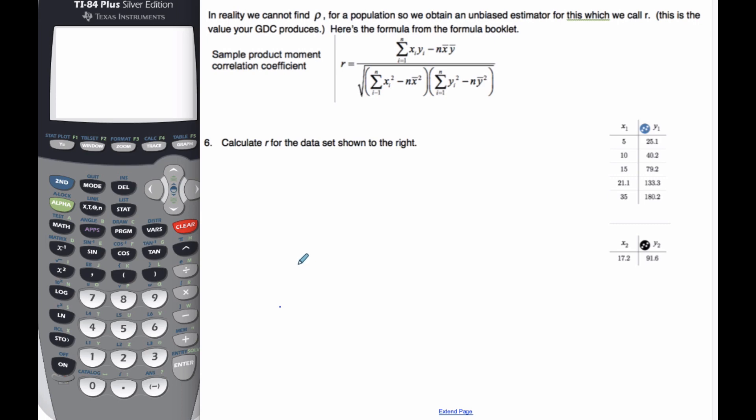Okay, in this example we've talked about R, our correlation coefficient, and we know that rho, Greek letters typically stand for the population, and we can never find rho actually because it's so rare, or almost never find rho, because it's so rare for us to find the actual population. So we obtain an unbiased estimator for this, which we call R.